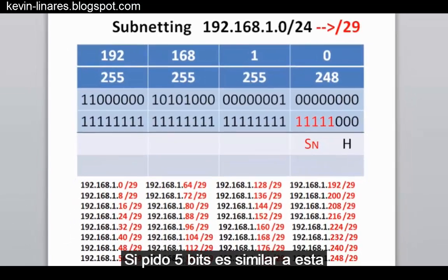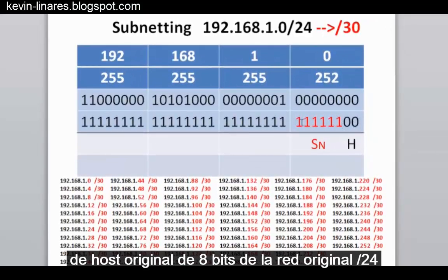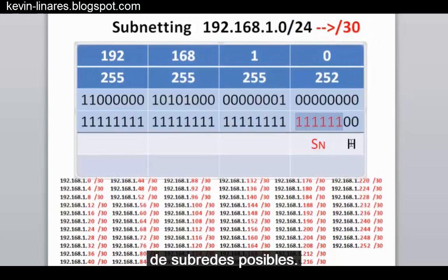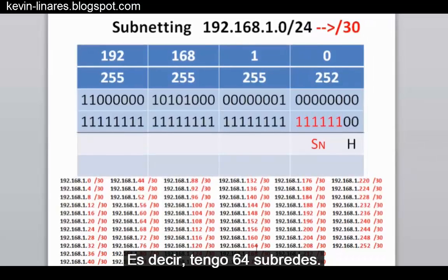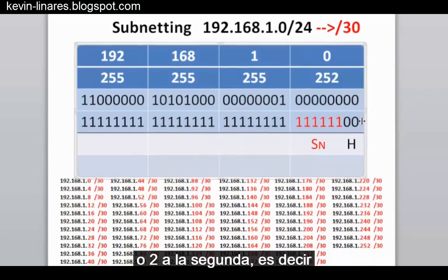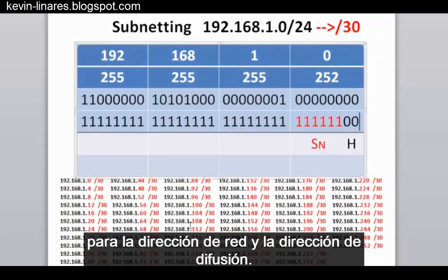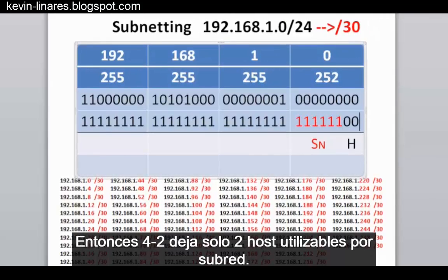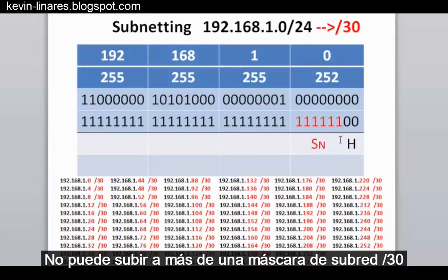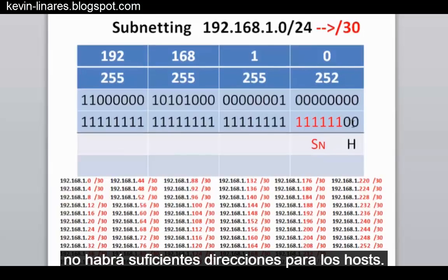Borrowing five bits gives slash 29, and borrowing six bits gives slash 30. After borrowing six bits from the original 8-bit host portion of the slash 24 network, we have two to the sixth power of possible subnetworks, meaning 64 subnets. The host portion is now only 2 bits, giving only 4 host addresses per subnet. Since we must leave room for the network and broadcast address, 4 minus 2 leaves only 2 usable hosts per subnet. You cannot go higher than a slash 30, or you won't have enough room for usable host addresses.